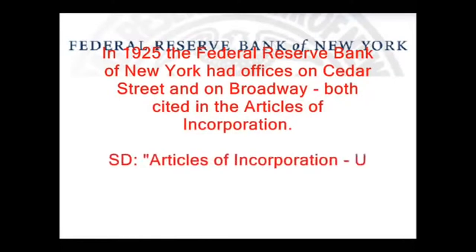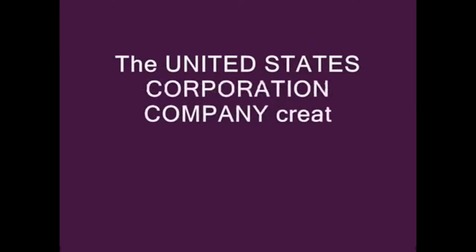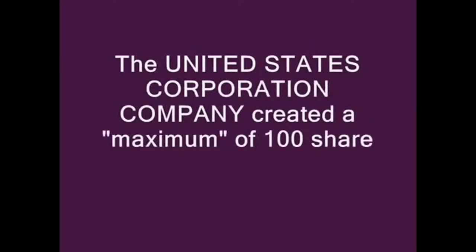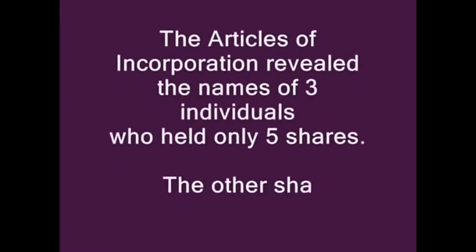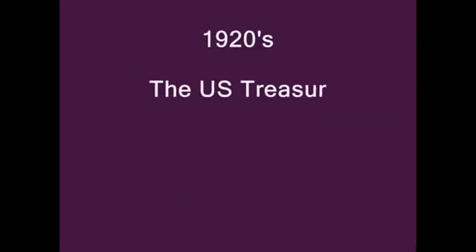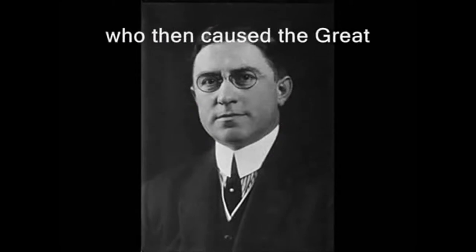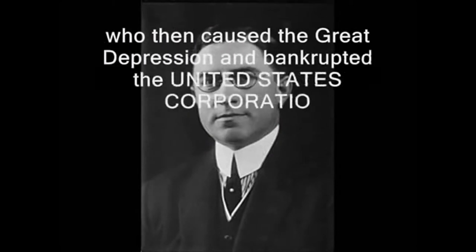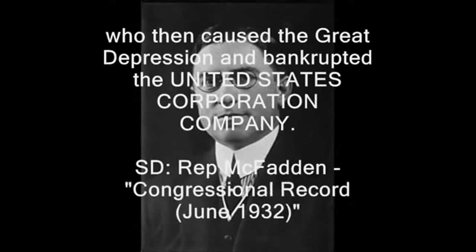The United States Corporation Company created a maximum of 100 shares of stock. The Articles of Incorporation revealed the names of three individuals who held only five shares; the other shareholders were not identified. 1920s: The U.S. Treasury was raided by the private Federal Reserve Bank, who then caused the Great Depression and bankrupted the United States Corporation Company. Source document: Representative Louis McFadden, Congressional Record, June 1932.